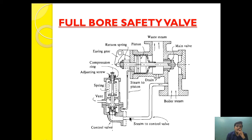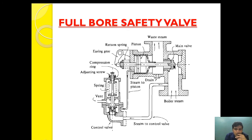Once the pressure exceeds the design pressure limit — i.e., 3% above the working pressure — the steam will act on the control valve surface and lift it against the spring. As it lifts, it finds a passage and this steam goes on to act on the operating piston area. The operating piston surface area is almost twice to four times that of the main valve area. Since force equals pressure multiplied by area, the force generated by the steam pressure on the piston will be much higher, pushing the piston in the opening direction.